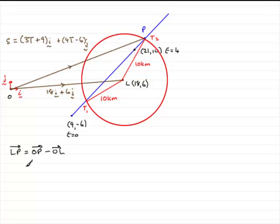Okay, so what we need to do now is just subtract these two vectors from one another. And if I do the I components first, we've got 3T plus 9 minus the 18 in the I direction. So let's just put that in as 3T plus 9 minus the 18 in the I direction. Now for the J components, we've got 4T minus 6 and then we've got minus this 6 here. So plus 4T minus 6 minus another 6 and that's in the J direction.